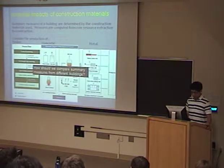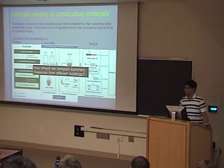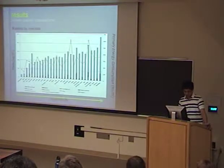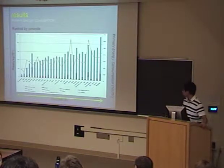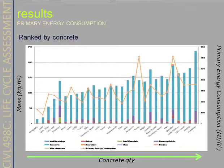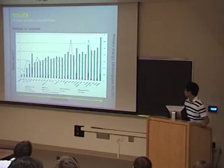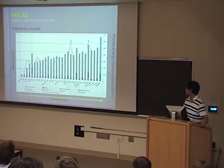The question is, how should we compare summary measures from different buildings? On this graph, we have buildings lined up from increasing concrete quantity, and on the orange line we can see the line for primary energy consumption. It appears that the more concrete in the building, the more primary energy you use.